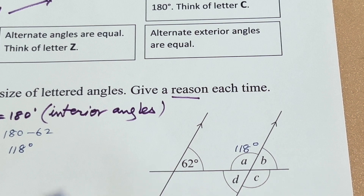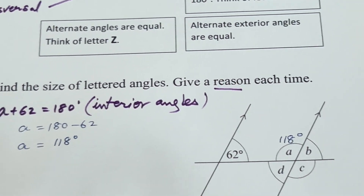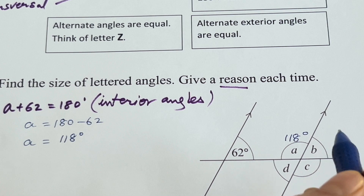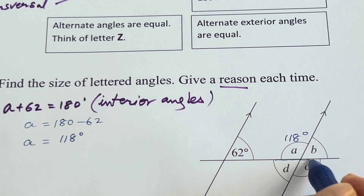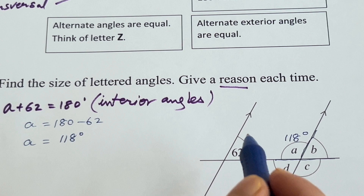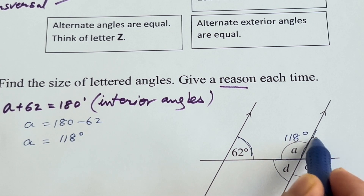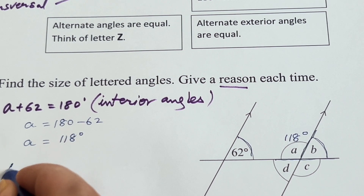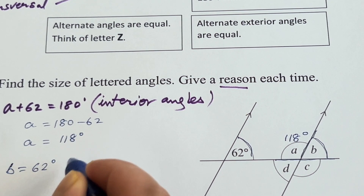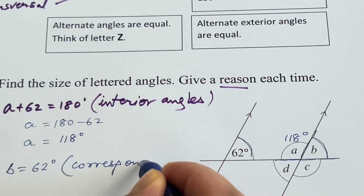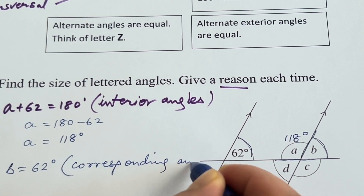For angle B, there is a straight line so they add up to 180 degrees, but if you look at 62 and B they are corresponding angles. So the easiest approach: B equals 62 degrees — corresponding angles are equal.